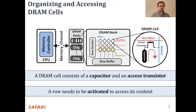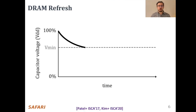To access a DRAM cell, its row is activated by fetching the data stored in the cell capacitor into the row buffer. Here we have a simplified diagram of the capacitor voltage over time. We see that the voltage decreases over time in an exponential decay.